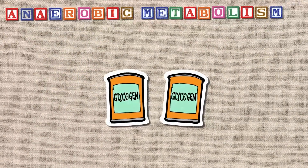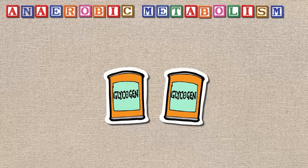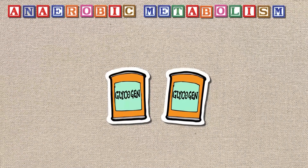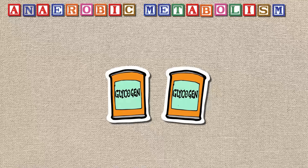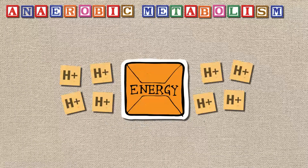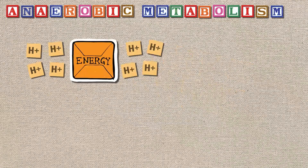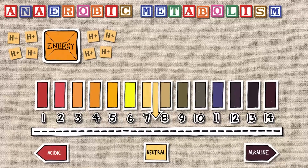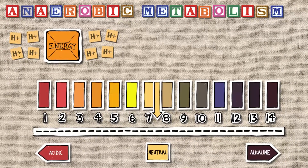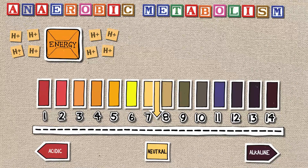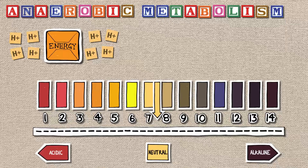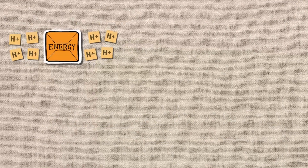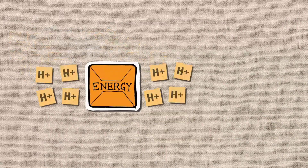Anaerobic metabolism is the breakdown of glycogen without oxygen to form energy, with hydrogen ions being by-products. These are produced in greater quantities, which leads to buffers being used up, allowing the hydrogen ions to be unbuffered in the blood, causing the pH to drop and cell damage in the fetus. This is known as metabolic acidemia.